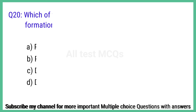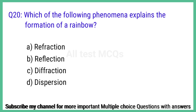Question number 20. Which of the following phenomena explains the formation of a rainbow? The right answer is option D: Dispersion.